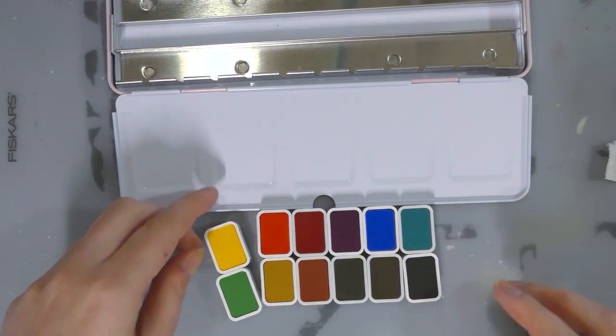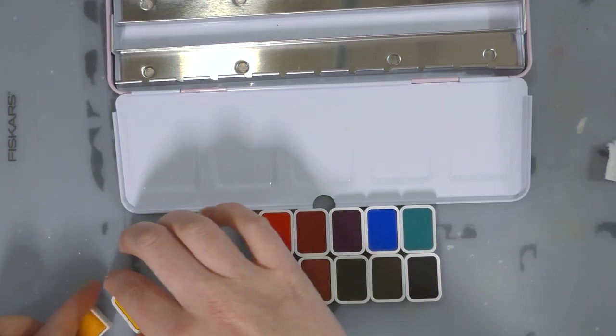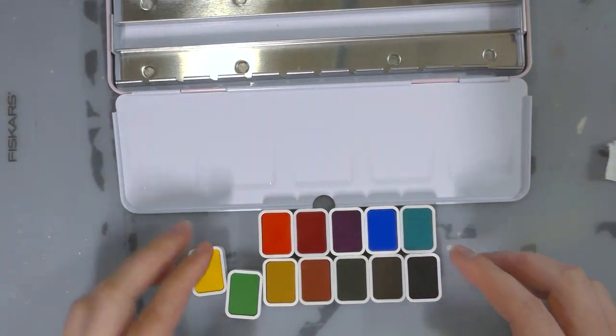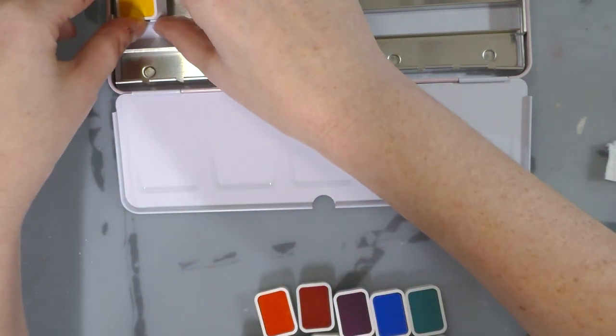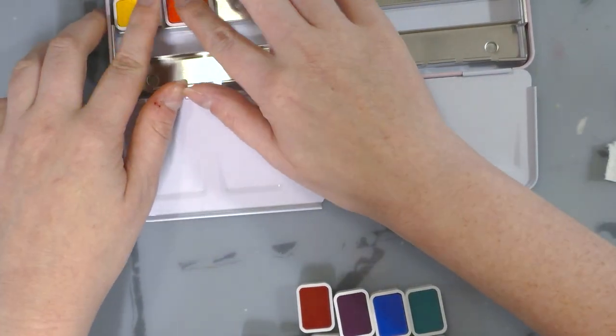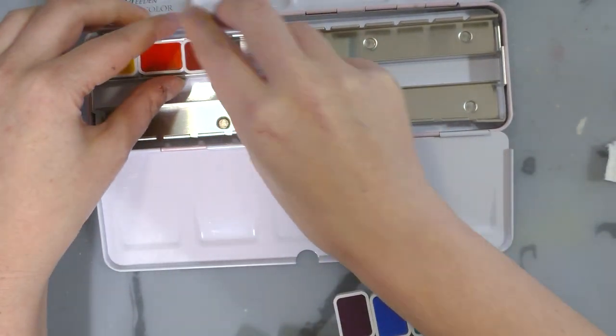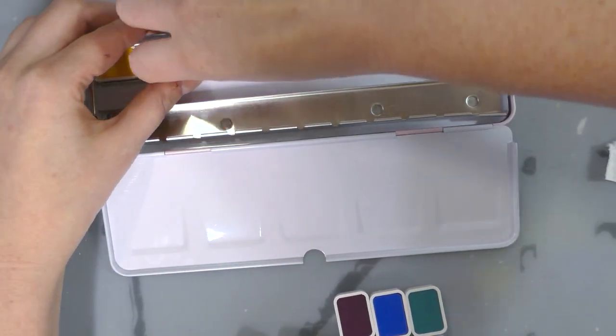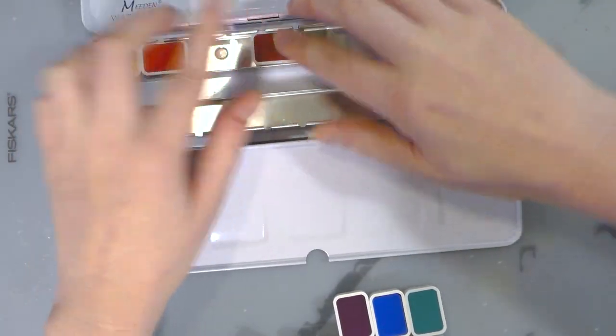So I have my colors here. They are slightly bigger than your average half pan. So I bought a larger watercolor tin. And I'm just going to slot them in for now because I may end up switching their order. And I will put links to everything in the description down below.